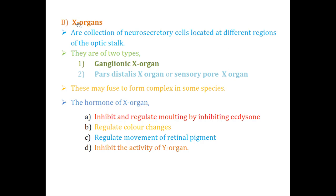The X-organ is also present in the eye stalk, scattered at different regions of the optic stalk. It is a collection of neurosecretory cells. There are mainly two types of X-organs: the ganglionic X-organ and the pars distalis X-organ, also called the sensory pore X-organ. In some crustacean species, these two parts fuse together to form a single complex structure, while in others they remain separated — depending on the species.